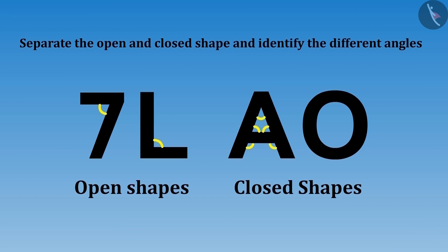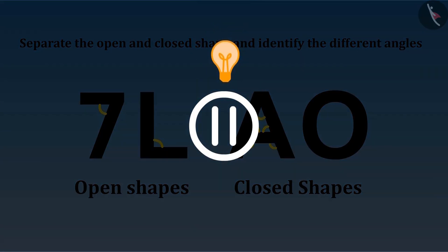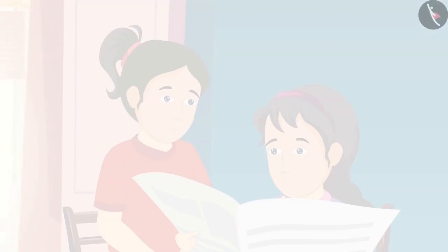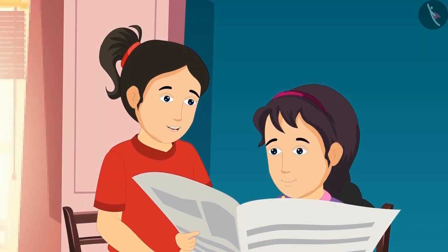Is Reva's answer correct? If you want, you can pause the video here and think for a while. Reva, you have identified the angles in A correctly, but this is not a closed shape but an open shape. Really? But how is it sister?